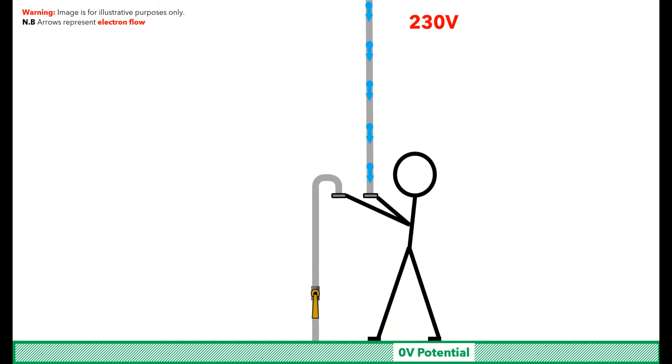If a person did complete the path to earth, either through themselves, or by touching the pipe coming out of the ground at the same time as the live pipe, they would complete the fault path, and could receive an electric shock that may be strong enough to cause serious injury or even death.